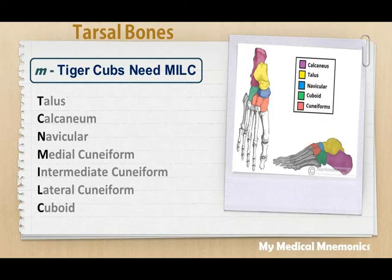So this mnemonic tells you the names of all 7 tarsal bones plus their arrangement. Tarsal bones are arranged in 2 rows. The proximal row contains talus and calcaneum. Then there is a distal row.